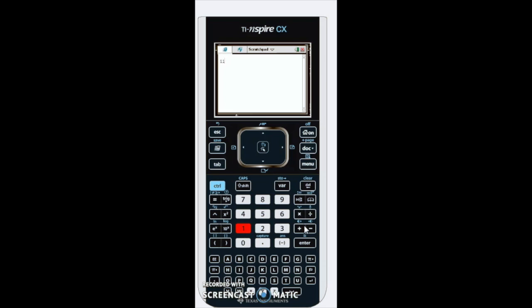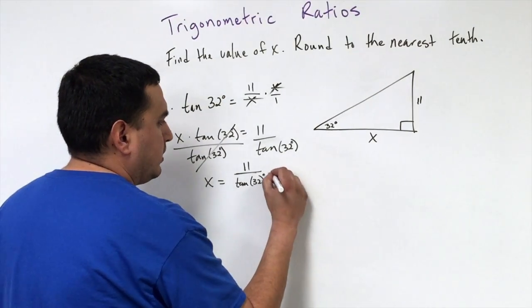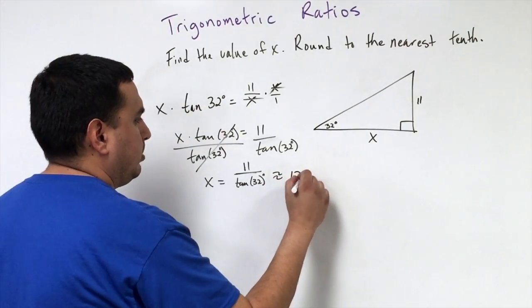It's 11 divided by the tangent. The trig functions are right here by the control button, so hit that, then we'll go to tangent of 32, and then we'll hit enter. We get 17.6037. So if I round this, it's going to come out to be about 17.6.